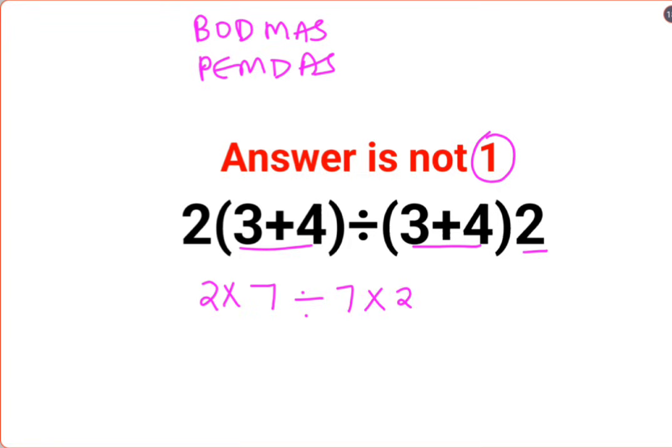Now here, a lot of people think this is so easy. 2 multiplied by 7 is 14 divided by 14, so answer is 1. No, that's not how these things work.